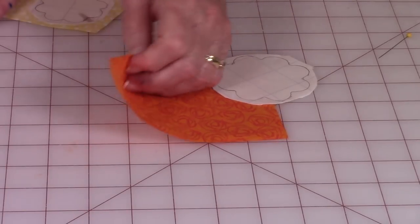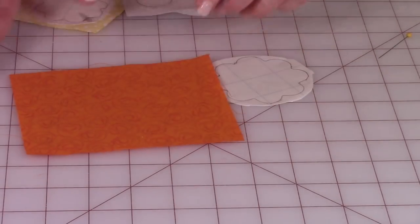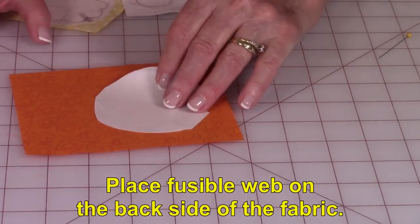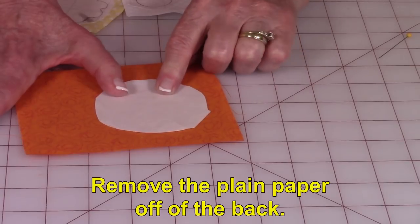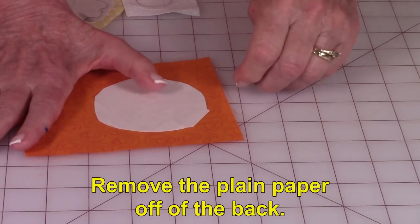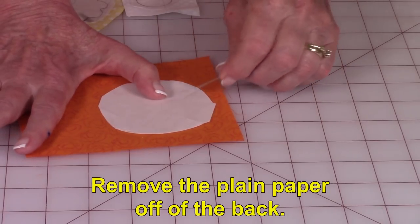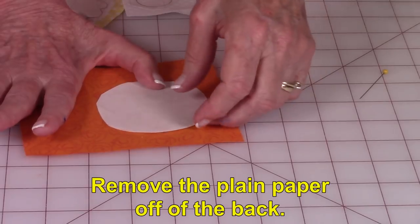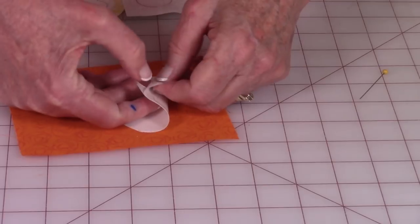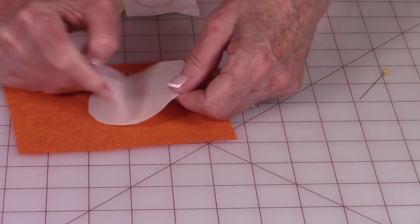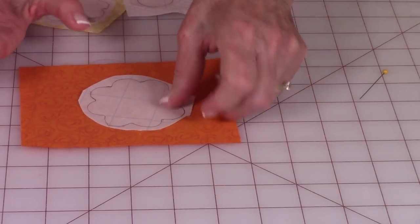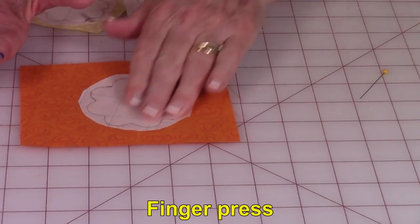For the center of the flower, I drew a one inch in diameter circle also on the fusible web. Here is my fabric. You want to turn it to the back side of the fabric. Take your fusible web and on the back you're going to remove this paper, the plain paper. If you have a hard time removing the paper, just take a straight pin and cut this paper on the back. And then just bend it. When the paper pops up a little bit, then you can pull it off.